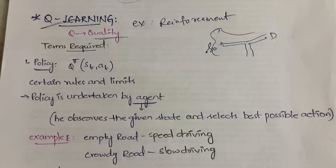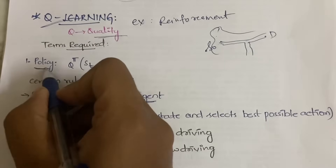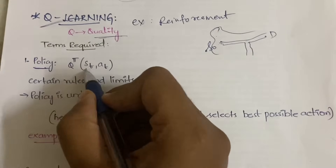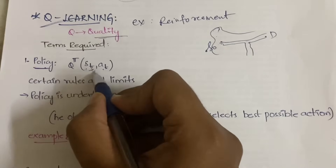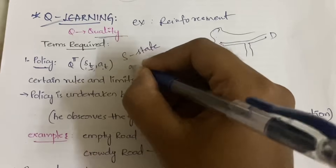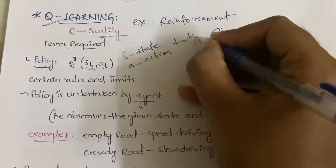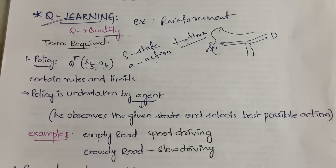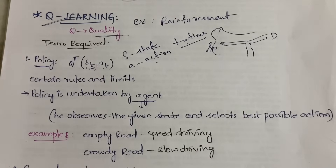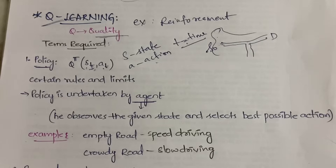To understand Q-learning, we need to understand some key terms. The first is policy. Policy is a combination of both state and action: S stands for state, A stands for action, and T stands for time — so state at that particular time and action at that particular time. Like a life insurance policy has rules, timelines, and deadlines, here we define a policy which is a set of actions and rules, defined as Q^π(S_t, A_t) — a combination of state and actions at a particular time.